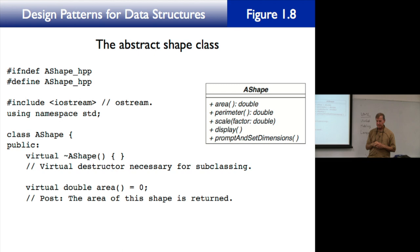The '= 0' makes this a pure virtual function in C++ — called 'abstract' in UML terminology. This means that area is not implemented in the abstract class; it must be implemented in the concrete subclass. Each subclass is responsible for providing its own implementation. An abstract shape has no attributes because if it were a rectangle it would need length and width, but if it were a circle it would need a radius.